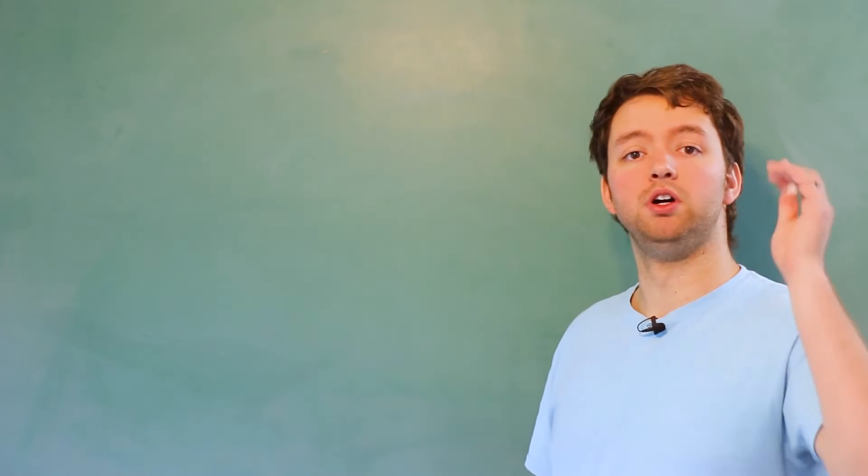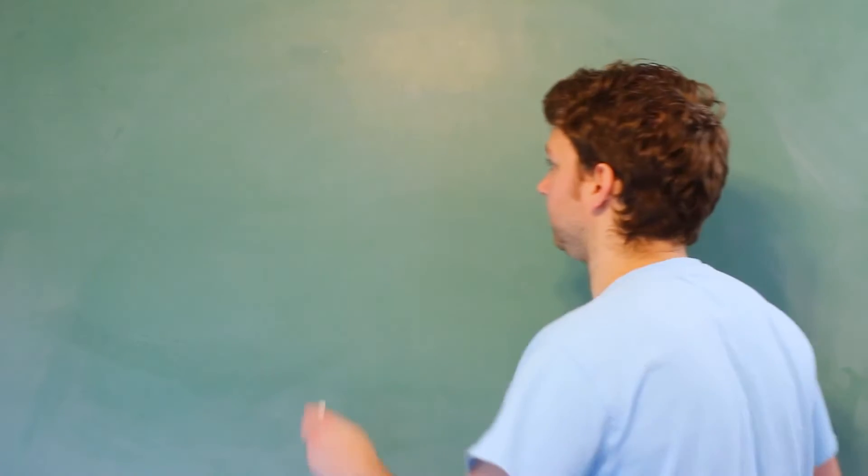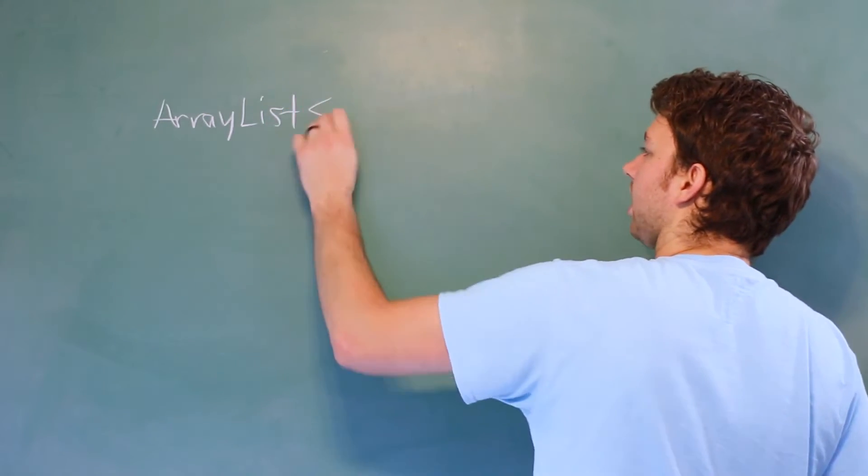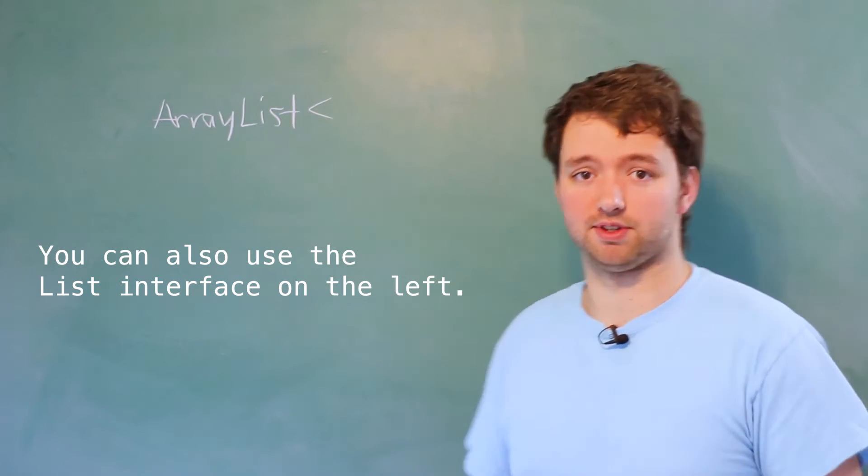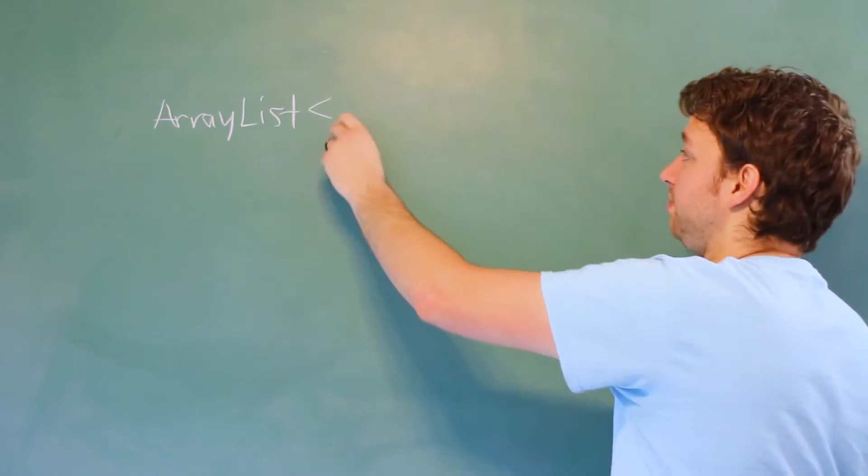So let's talk about the syntax for creating an array list. You're going to have to import something, but we'll worry about that in the next video where we're doing the hands-on version of this. For now, let's just talk about the concept of array lists. It's going to look like this. You're going to say array list just like that, and then you're going to put the less than greater than symbols, whatever they're called, alligator mouths, and you're going to put the type in here.